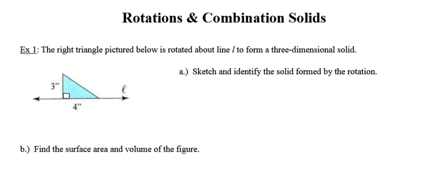This video will show you how to find volume and surface area of figures formed by rotations and combination solids. In example one, a right triangle is rotated about line L to form a three-dimensional solid. In part A, we want to sketch and identify the solid formed by this rotation.